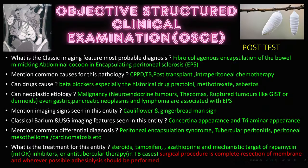In summary for the post-test: EPS is fibrocollagenous encapsulation of bowel loops — the abdominal cocoon. Common causes include CAPD, TB, post-transplant, and intraperitoneal chemotherapy. Beta-blockers like practolol, methotrexate, and asbestosis can cause EPS. Neoplastic etiologies include neuroendocrine tumors, thecomas, ruptured GISTs or dermoids, gastric/pancreatic neoplasms, and lymphomas. Classic signs are the cauliflower sign, gingerbread man sign, concertina-like appearance on barium, and trilaminar appearance on ultrasound. Differentials include peritoneal encapsulation syndrome, tubercular peritonitis, peritoneal mesothelioma, and carcinomatosis.